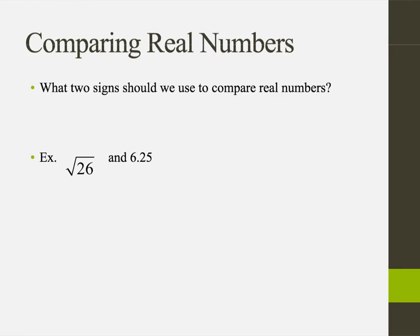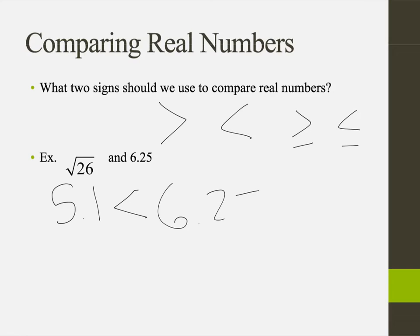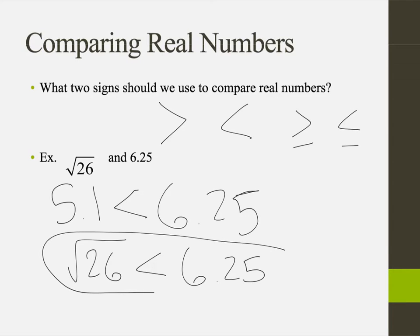This next question asks what two signs we use to compare real numbers — we're talking about which one's bigger or smaller, greater than or less than. So the square root of 26 — we want to convert that to a decimal, so use your calculator. That's about 5.1 when rounded to the nearest tenth, because it's 5.0990 and so on. So 5.1 is less than 6.25. Square root of 26 is less than 6.25, but it's easier to see if you convert to a decimal first.